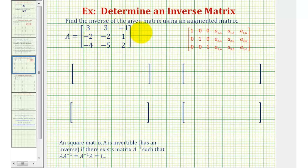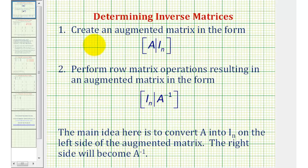Welcome to an example on how to find the inverse of a three by three matrix using an augmented matrix. The first step is to create an augmented matrix where the left side is matrix A, or the given matrix, and the right side is an identity matrix. Then we perform row operations, resulting in an augmented matrix where the left side becomes the identity matrix, and the right side will be the inverse of matrix A.